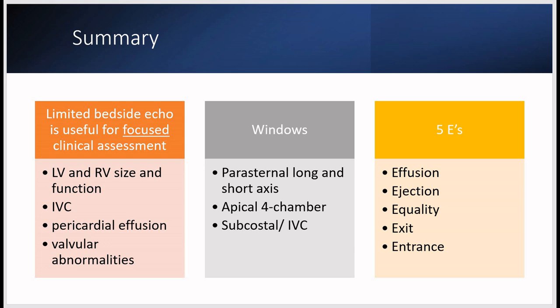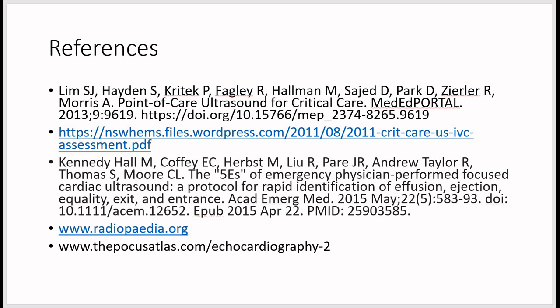In summary, limited bedside echo is useful for focused clinical assessment of LV and RV size and function, the IVC, pericardial effusion, and grossly abnormal valvular abnormalities. The windows covered are parasternal long, parasternal short, apical four chamber, and subcostal/IVC. The five E's are effusion, ejection, equality, exit, and entrance.